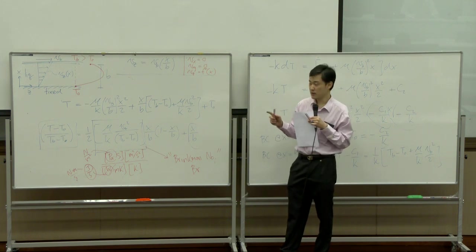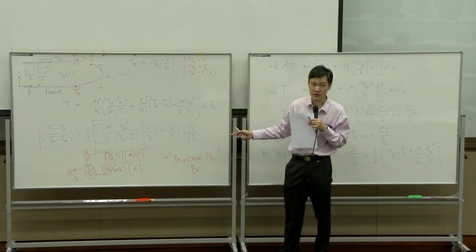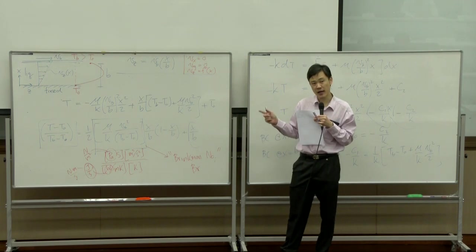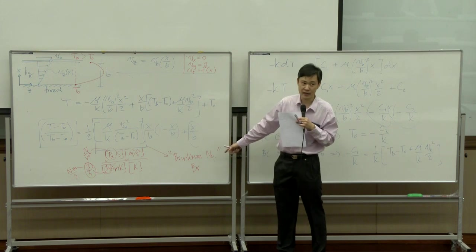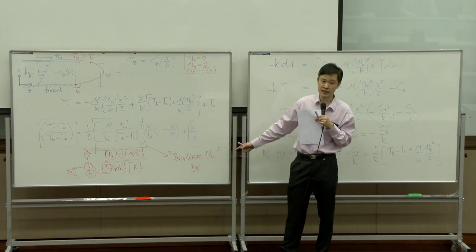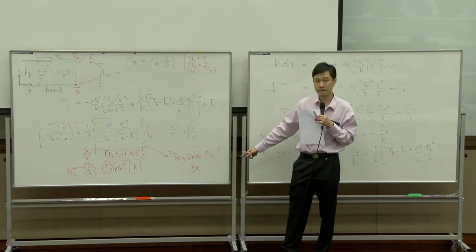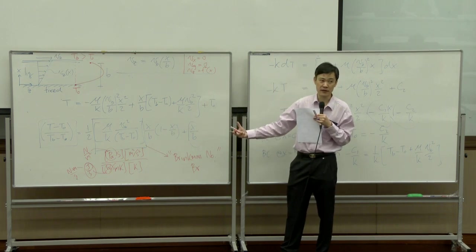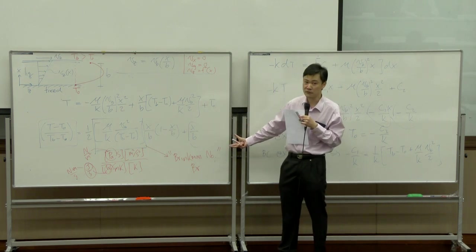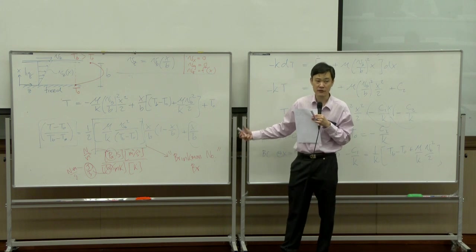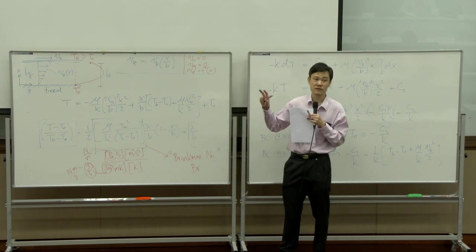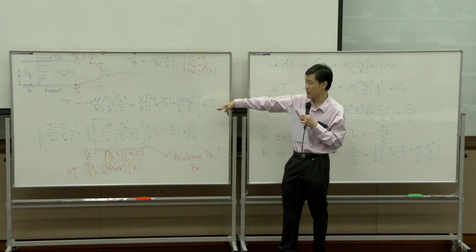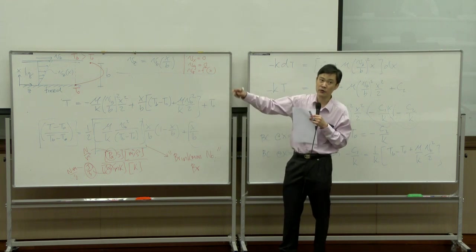If the Brinkman number is high, viscous heat is dominating — as with a meteorite entering the atmosphere, Brinkman number is really, really large and things burn up. If Brinkman number is low, you can ignore the viscous heat term and the equation turns into pure conduction.